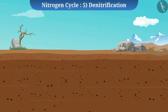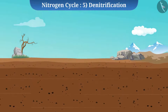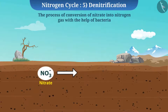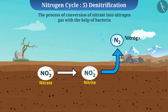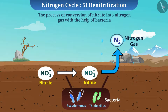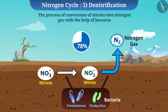The final stage of the cycle is denitrification. The process in which nitrogen makes its way back into the atmosphere by conversion of nitrate into nitrogen gas with the help of bacteria such as Pseudomonas and Thiobacillus is called denitrification. This completes the nitrogen cycle, and in this way the percentage composition of nitrogen in the atmosphere is maintained.